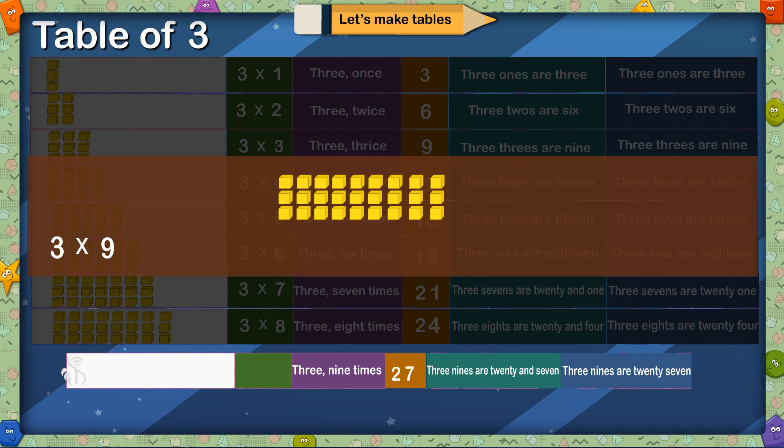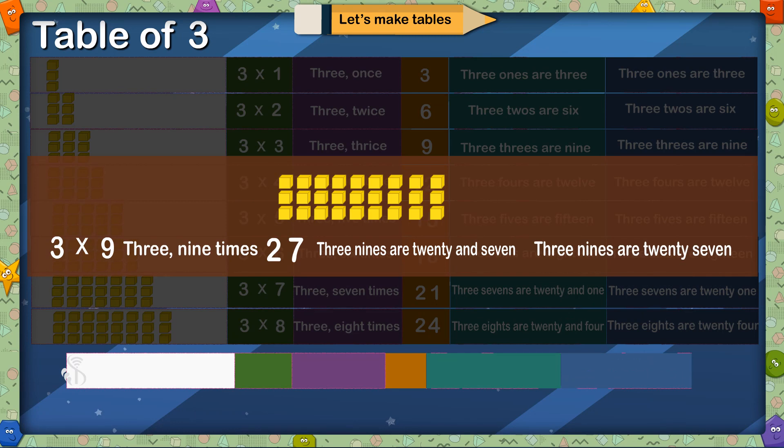3 multiplied by 9, 3 9 times is 27, 3 9s are 20 and 7, 3 9s are 27.